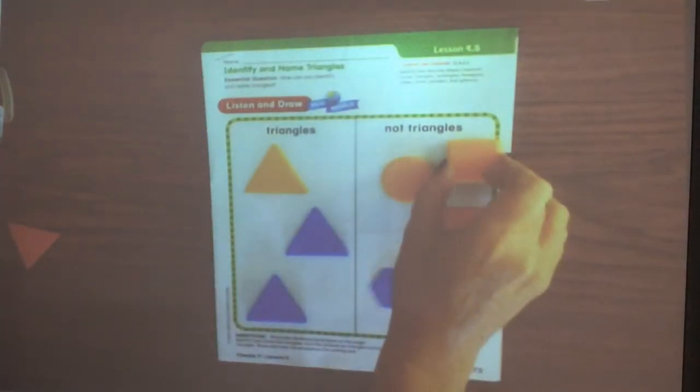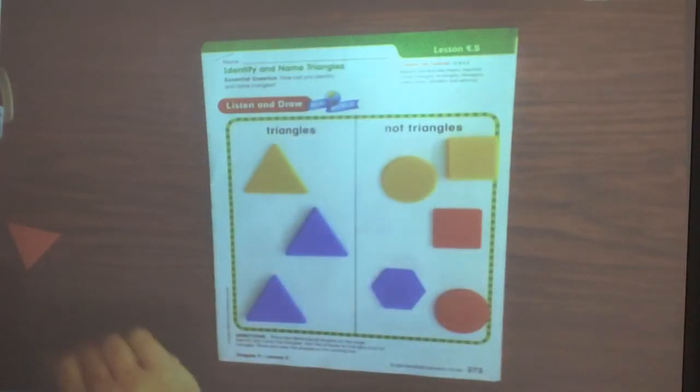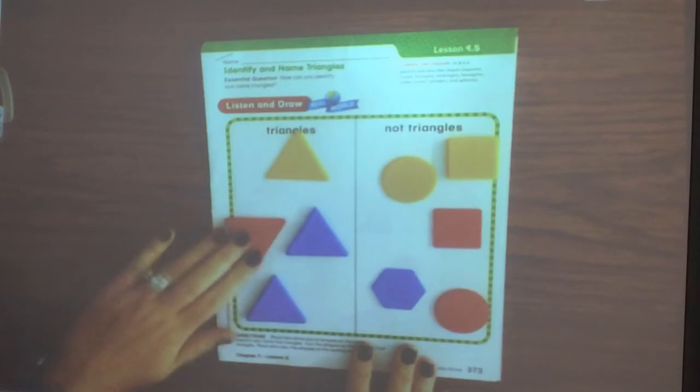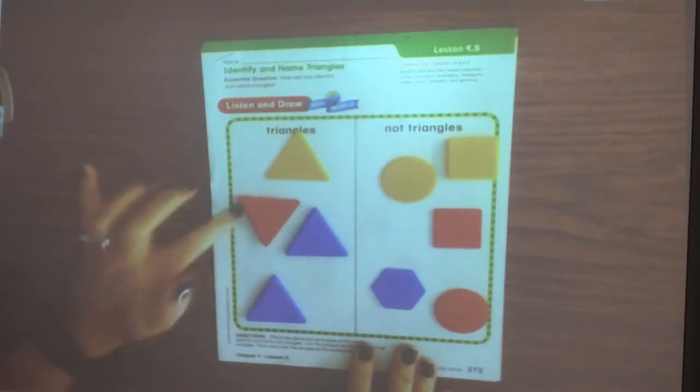There is another square, so it is not a triangle. Here is another triangle. Even if it is faced this way with one, two, three sides, one, two, three vertices, it is still a triangle. Doesn't matter which way we turn it, it is still a triangle.